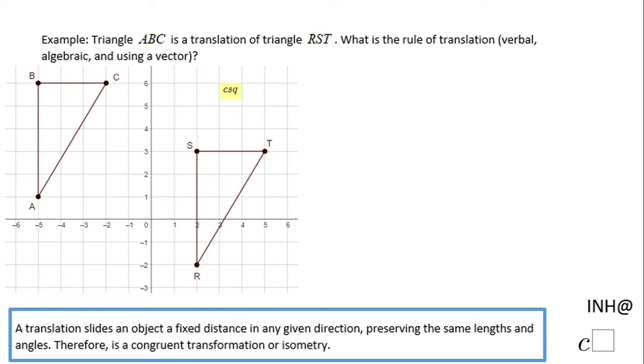Welcome or welcome back to iNH@C score. In this example, we have triangle ABC as a translation of triangle RST. So you need to be careful - this triangle is translated and is moved right here. What is the rule of translation? We need a verbal way, an algebraic way, and using a vector.